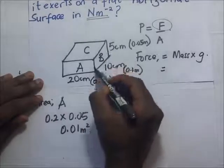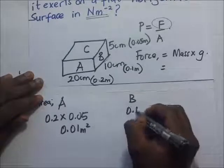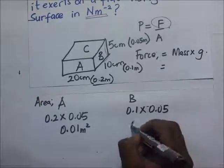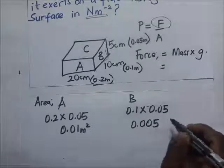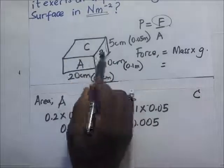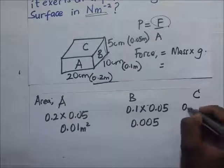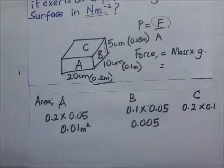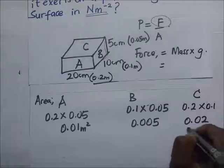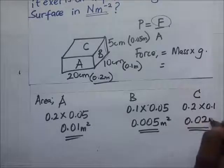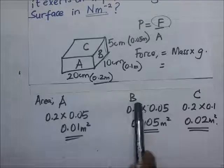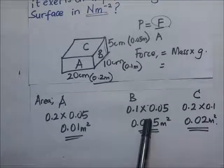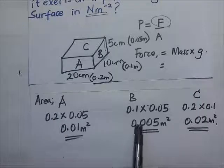The area of face B is 0.1 times 0.05, which gives 0.005 meters squared. The area of face C is 0.2 times 0.1, which gives 0.02 meters squared. Looking at all three faces A, B, and C, the smallest area is face B at 0.005 meters squared.